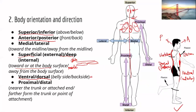Proximal means nearer the trunk or point of attachment. We usually use proximal and distal to describe structures of the limbs — the arms and legs — which are attached to the trunk. For example, looking at the elbow and the wrist: the wrist is further from the trunk, so the wrist is distal to the elbow, and the elbow is proximal to the wrist.